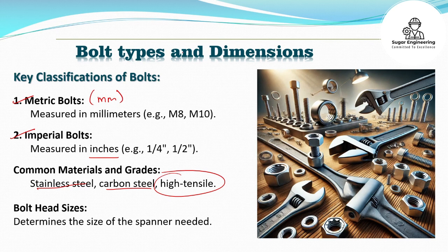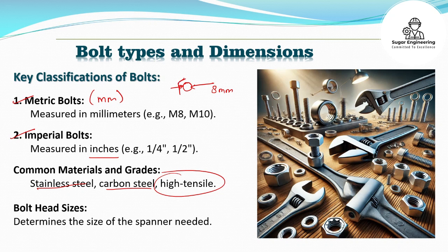Bolt head sizes determine the size of the spanner needed. For example, if a bolt is 8mm — as shown here, this is the size at the side of the thread, which is 8mm — then we need to look at the head of the bolt to select the correct spanner size. In this video we will include all the sizes of the spanners.